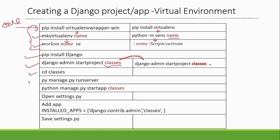To verify your project is running, use the command `py manage.py runserver`. If it's working properly, stop the server with Ctrl+C and start creating your application. The command to create an application is `py manage.py startapp` followed by whatever name you want to give the app.